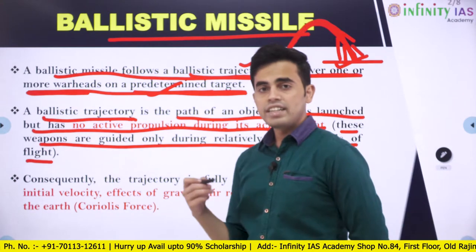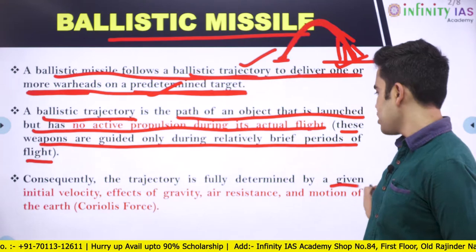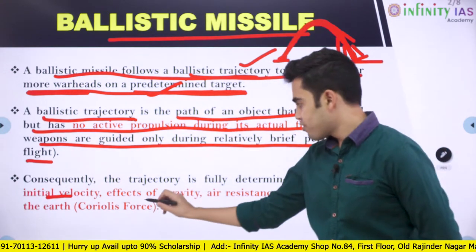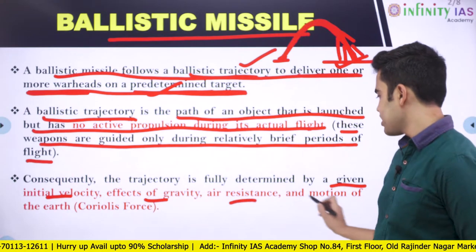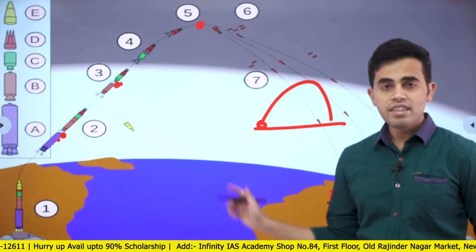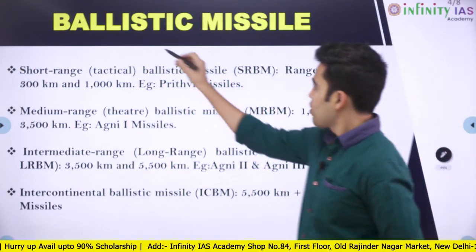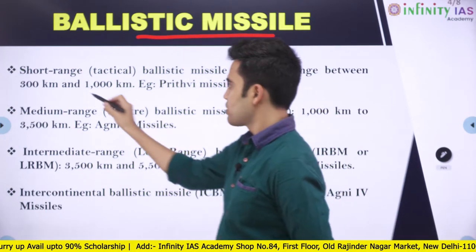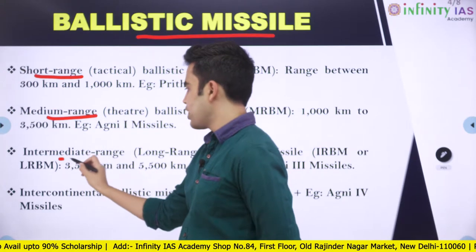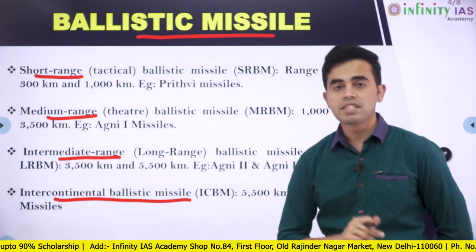What determines the trajectory of the missile? It is determined by the initial velocity, effects of gravity, air resistance, and motion of the earth. With this in mind, we will see what are the types of ballistic missiles. They can be short-range, medium-range, intermediate-range, and intercontinental ballistic missile.